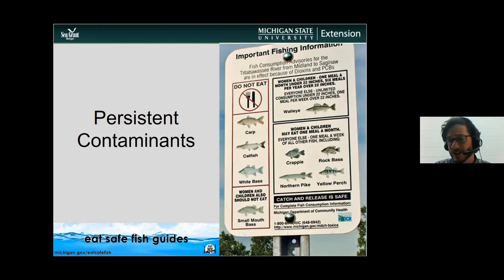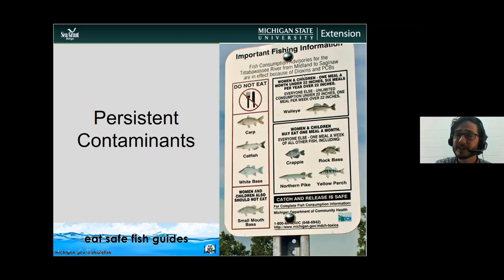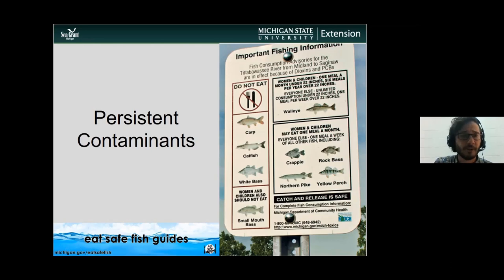Different water bodies have different impairments. This is an old sign, but it covers the Tittabawassee River from Midland to Saginaw — in effect because of dioxins and PCBs that accumulate in fish and can enter us and have negative health consequences.